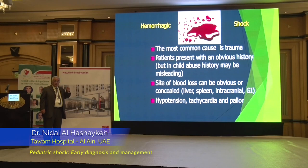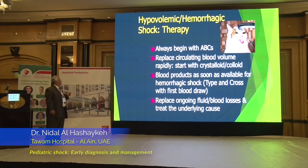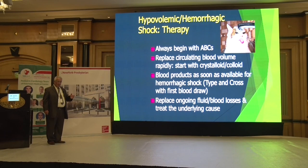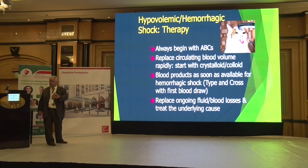If it is hypovolemic with trauma, it is hemorrhagic shock. Trauma can be evident or, in child abuse, concealed — so look for sites of bleeding such as liver, spleen, trachea, and GI tract. Don't be misled by the history because in child abuse it may be misleading. The patient will be in pain, tachypneic, and hypotensive. Therapy: always start with ABCs, replace with crystalloid first, and give blood products as early as possible. If uncrossmatched blood is needed, give O-negative for both male and female children. With the first blood draw, take a sample for type and cross.